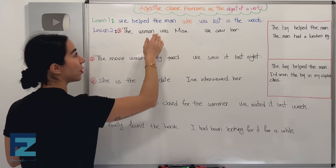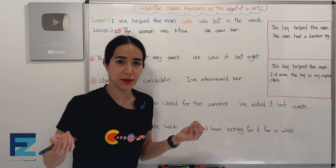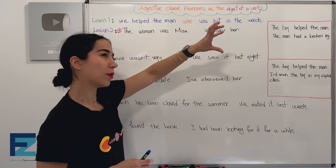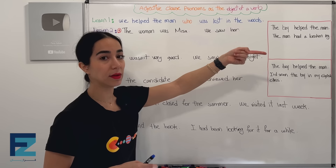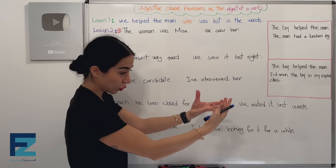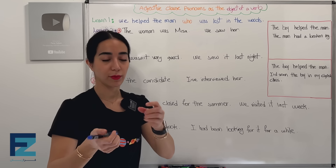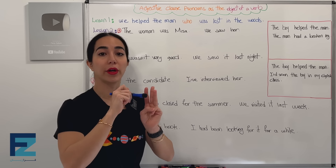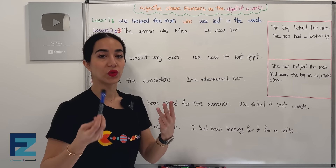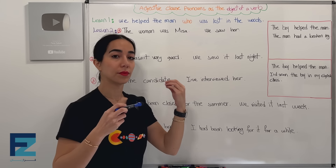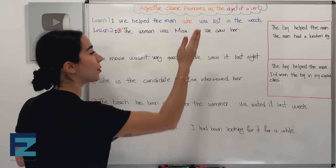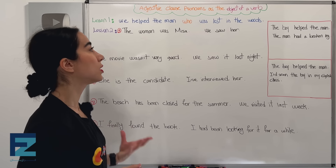He is referring to whom here? To the man. We helped the man — which man? He was lost in the woods, the one who was lost in the woods. We said that 'he' is the subject of the second sentence. We replaced it, and since this clause is describing the man — just like an adjective — we call it an adjective clause. So instead of 'he,' we wrote: we helped the man who was lost in the woods.